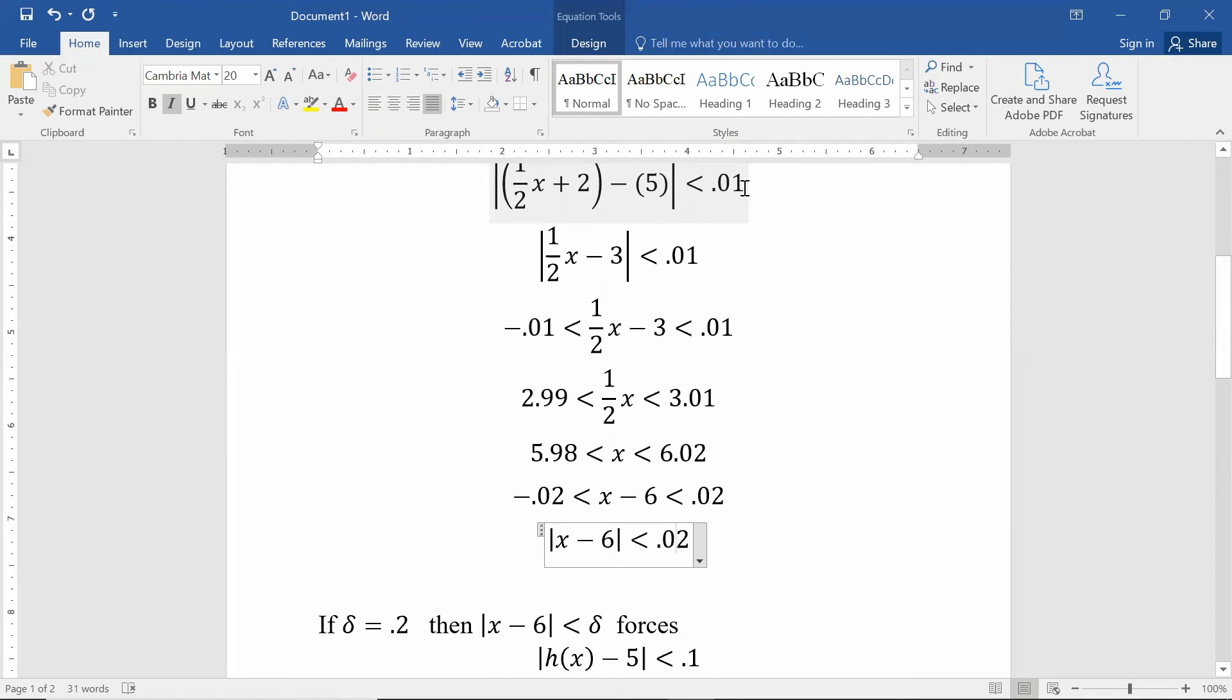So if I set my delta to be 0.02, then |x - 6| less than delta forces my output minus 5 to be less than 0.01.